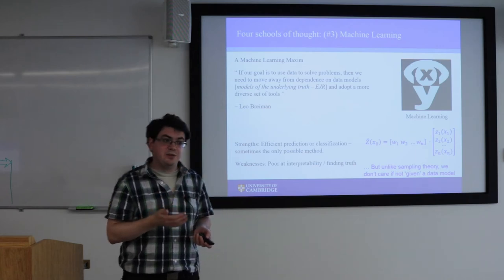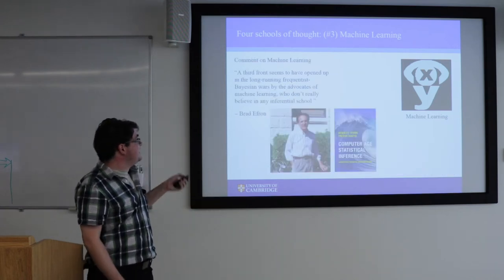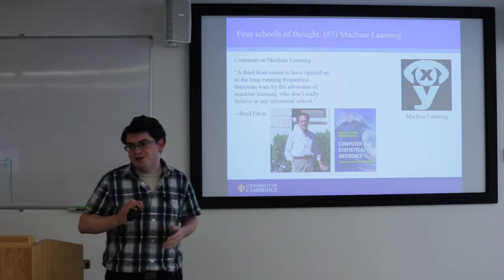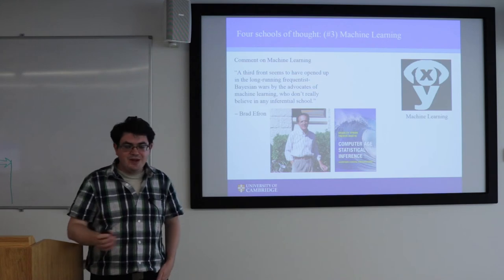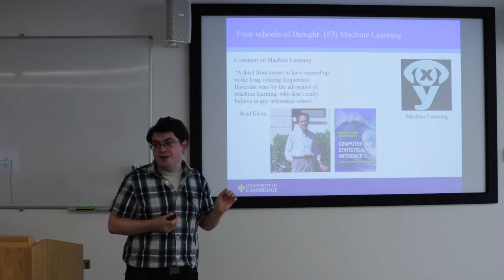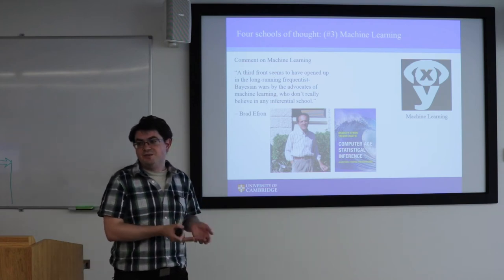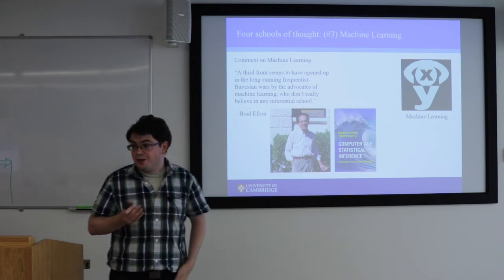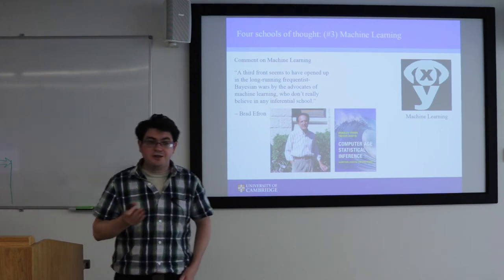The fundamental weakness of machine learning is that it deliberately doesn't care about interpretability — it doesn't necessarily give you parameters which are easily understood once it's trained and come up with a method that works. Brad Efron says: 'A third front seems to have opened up in the long-running frequentist-Bayesian wars, started by the advocates of machine learning who don't actually believe in any inferential school at all.' The machine learning people say it's irrelevant, because they don't care about underlying physical truth — only about how accurately you can make predictions.